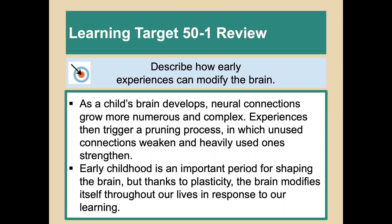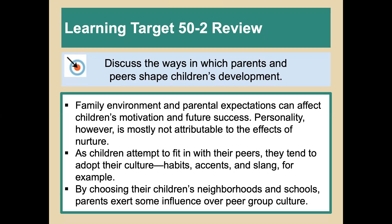Thanks to plasticity, the brain is able to modify itself throughout our lives in response to learning. Learning target two: discuss the ways in which parents and peers shape children's development. Family environment and parental expectations can affect children's motivation and future success, but personality is mostly attributable to nature rather than nurture. As children attempt to fit in with peers, they adopt peer culture — from habits to accents and slang. By choosing their children's neighborhoods and schools, parents can influence that peer influence.